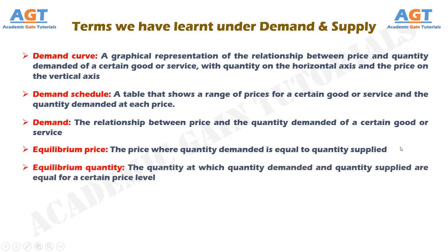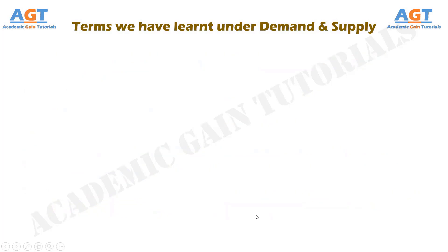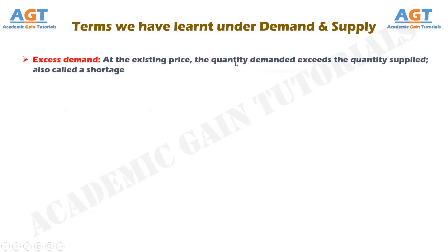The equilibrium quantity is the quantity at which quantity demanded and quantity supplied are equal for a certain price level. Equilibrium is the situation where quantity demanded is equal to the quantity supplied — the combination of price and quantity where there is no economic pressure from surpluses or shortages that would cause price or quantity to change.